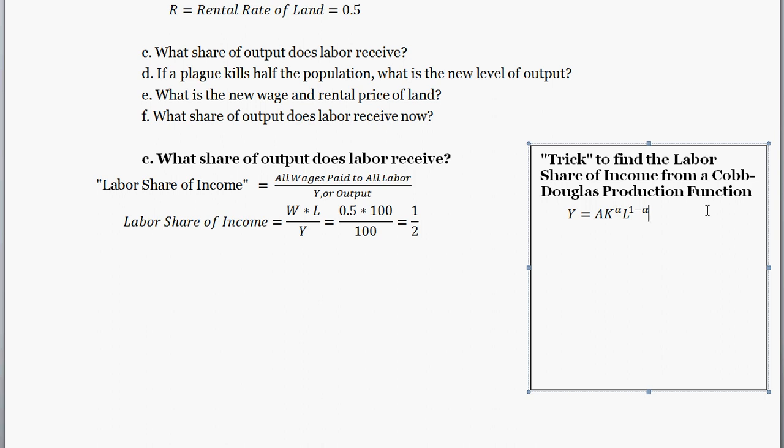And the labor share of income is always going to be equal to the exponent above labor. And the share of income that goes to capital is going to be equal to the exponent above alpha. So given any Cobb-Douglas production function, just by looking at this, you could know what the labor share of income is going to be, one minus alpha, and you know what the capital share of income is going to be, just alpha. So let me just summarize what I just said.